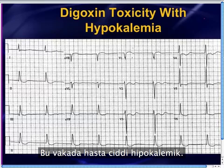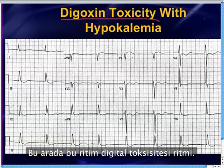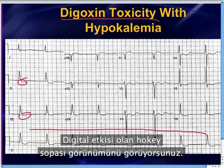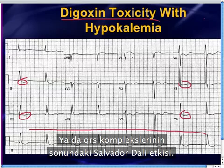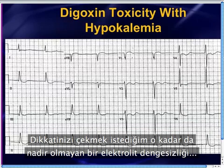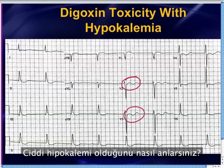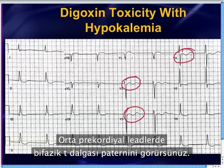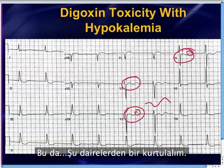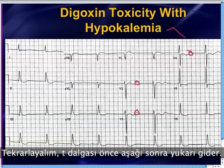Here's one more example. This patient has fairly severe hypokalemia of around 2.0 in the presence of digitoxicity. We're not going to get into the rhythm — this is a digitoxic rhythm, regularized AFib. You see the nice dig effect, that hockey stick or Salvador Dalí appearance at the end of the QRS complexes. What I want to focus on is the electrolyte problem not uncommon with chronic digitoxicity: severe hypokalemia. In those mid-precordial leads, you see the biphasic T-wave pattern going down and then up — those are really good U-waves. The T-wave pattern goes up, down, and then up. Don't confuse that with Wellen's, which goes up and then down.